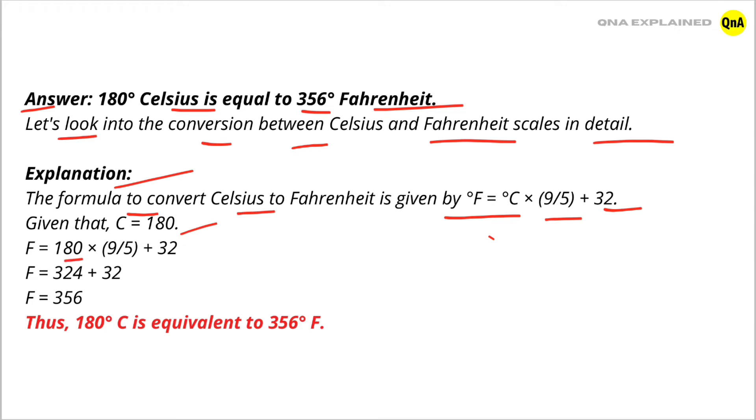F = 180 × (9/5) + 32 = 324 + 32 = 356. Thus, 180 degrees Celsius is equivalent to 356 degrees Fahrenheit.